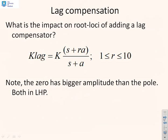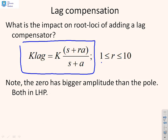First then, what is a lag compensator? You'll see we've summarised a generic lag here as K times (S plus RA) over (S plus A). We'll notice that R is selected between 1 and 10 and A is greater than 0. So both the pole and zero are in the left half plane and the zero has a bigger amplitude than the pole.